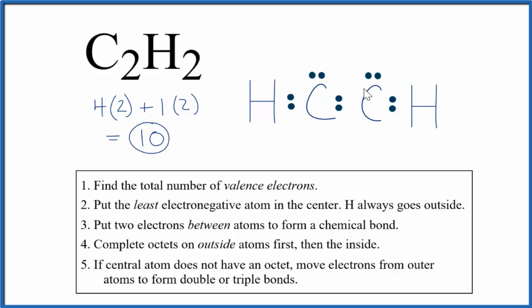So at this point, 2, 4, 6, 8, 10. We've used all our valence electrons. Hydrogens are good, but each carbon only has 6 valence electrons.